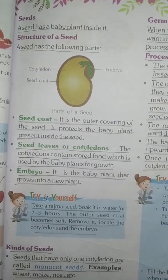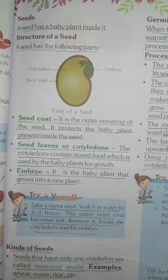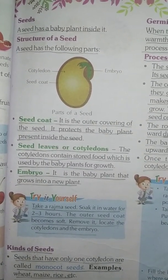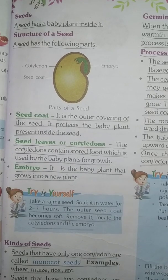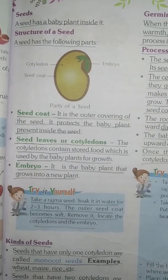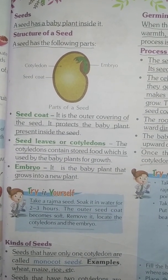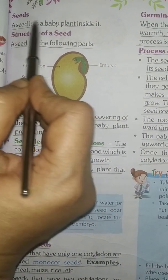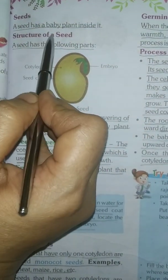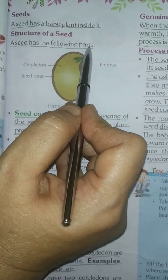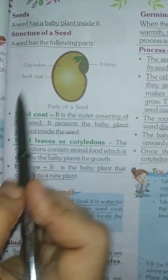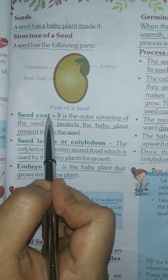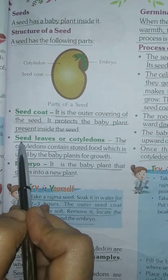Okay students, page number 37 — Seeds. Underline: Seeds. A seed has a baby plant inside it. Structure of a seed: a seed has the following parts — number one: seed coat, number two: cotyledons, number three: embryo.